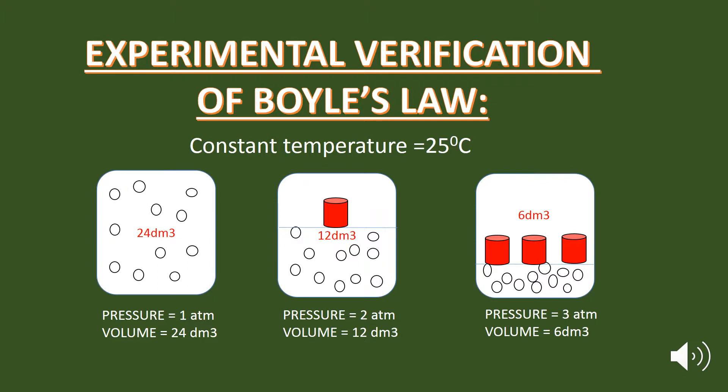Experimental verification of Boyle's law. Consider a gas contained in a cylinder fitted with a movable and weightless piston. Let's say the initial volume of a gas is 24 cubic decimeters and the pressure on it is 1 atm, having no weight on it and only the air is exerting pressure on it. Now, place one weight on the piston. The pressure will become stable and it can be observed that the volume is reduced to half. As you can see here, the volume is 12 cubic decimeters.